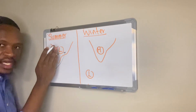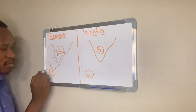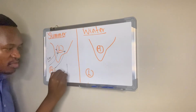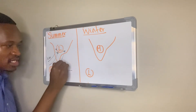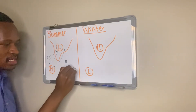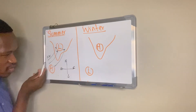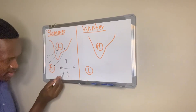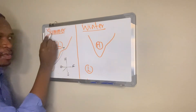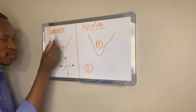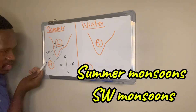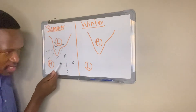Looking at these winds, they are coming from a southwest direction. Let me draw my cardinal points — north, south, west, east. These winds are coming from a southwest direction. So summer monsoons are also known as southwest monsoons, because they are coming from a southwest direction.